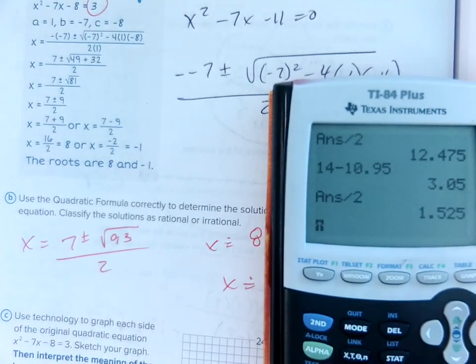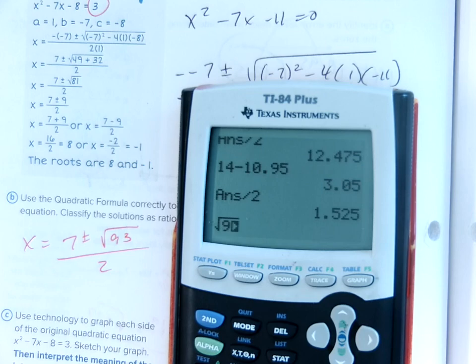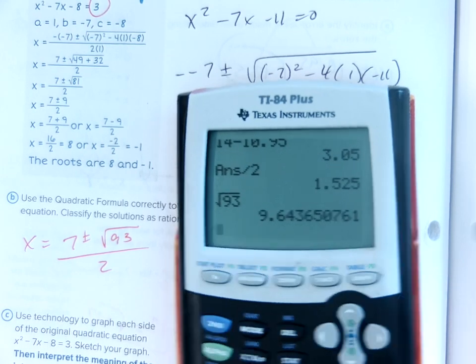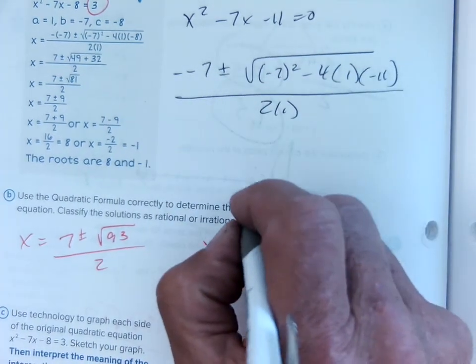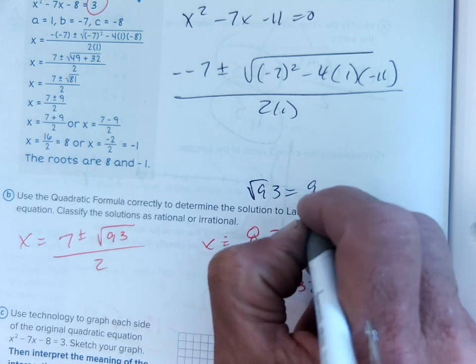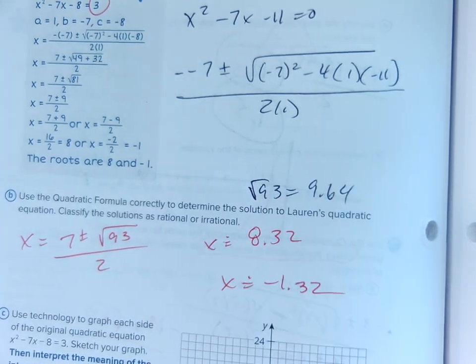Or if you use a calculator, you'll wind up with the square root of 93, I don't know what that is. Square root of 93, about 9.64. Square root of 93 is about 9.64 and you get both answers.